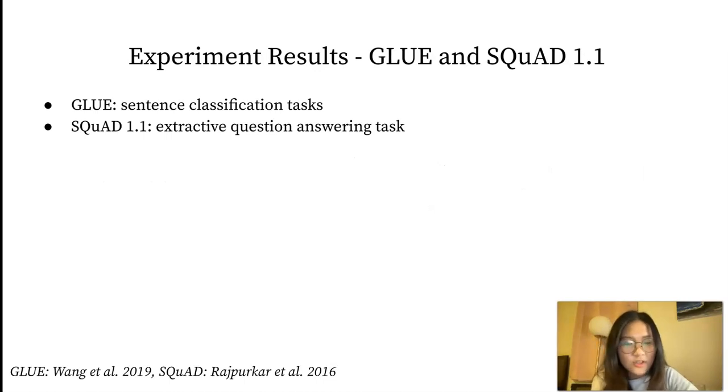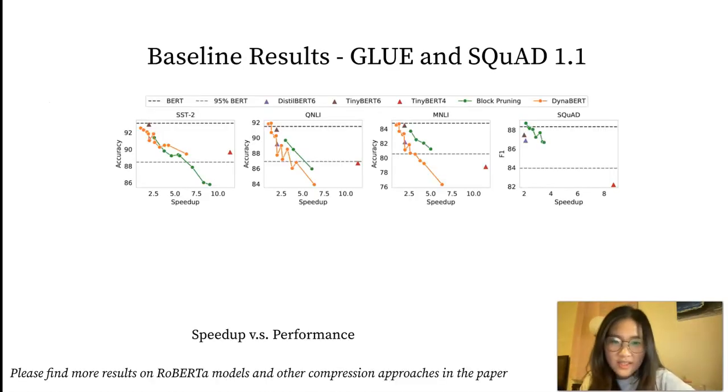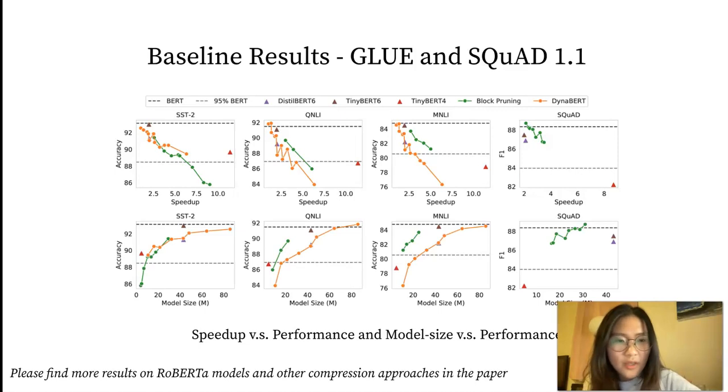We mainly tested on two types of datasets, GLUE, which is a set of sentence classification tasks, and SQuAD, an extractive question-answering task. We first show the performance plot in terms of speed-up, and also in terms of model size, of various distillation and pruning baselines on four datasets. The curves are pruning baselines, including block pruning and DynaBERT, and the triangles show distillation baselines, including DistilBERT and TinyBERT.